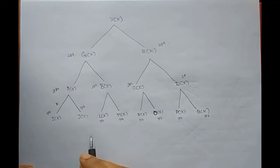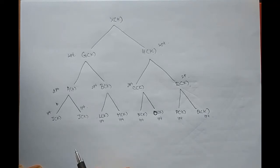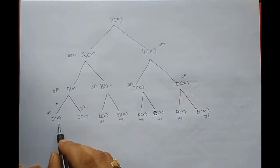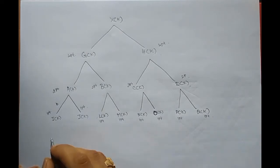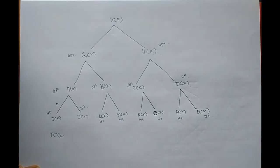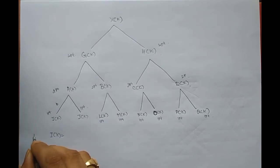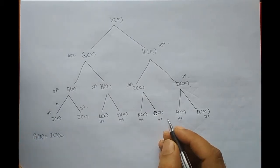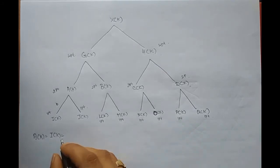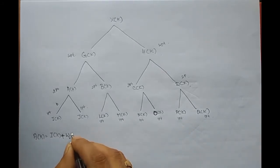I am not going to do any mathematics to derive the equation for this. By this time you might have got some idea how to decompose the x of k sequence. Let me directly write the i, j, l, m, n, o, p, q equations. So a of k is equal to i of k plus W2 power k into j of k.